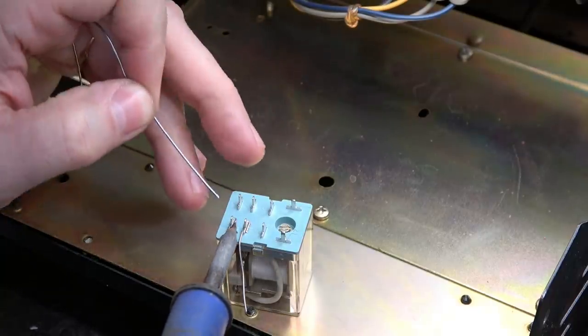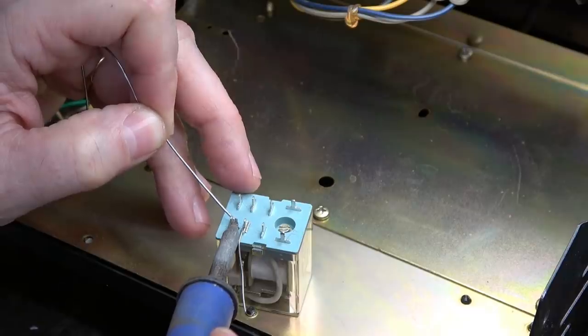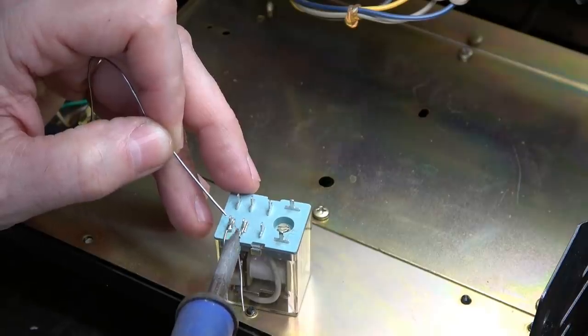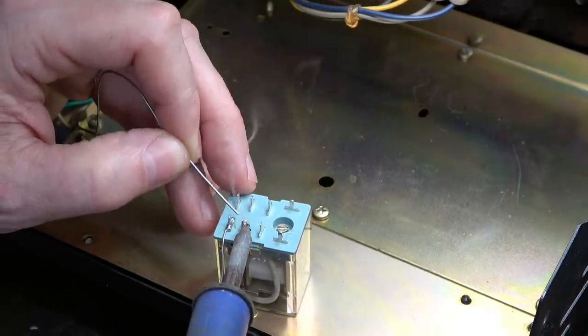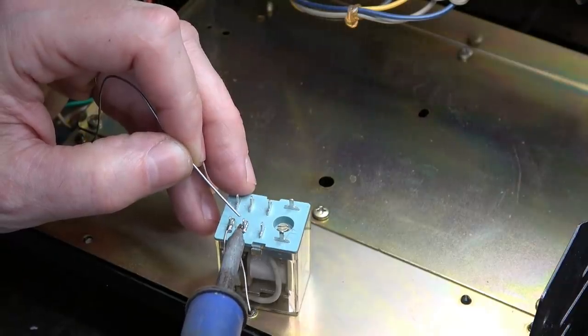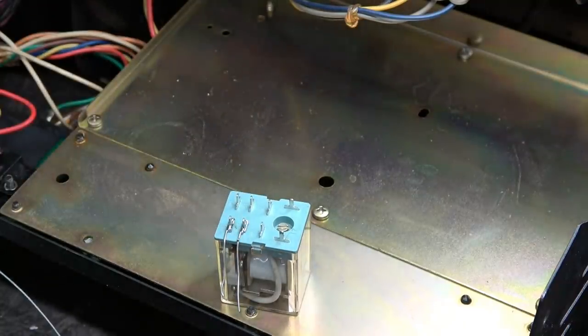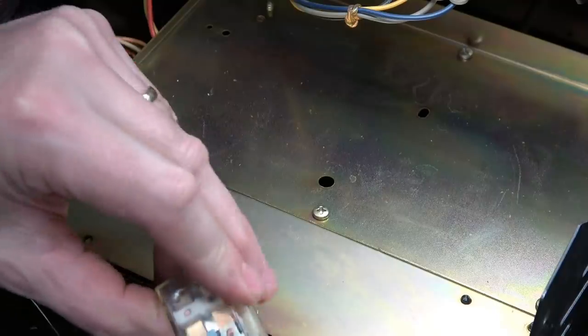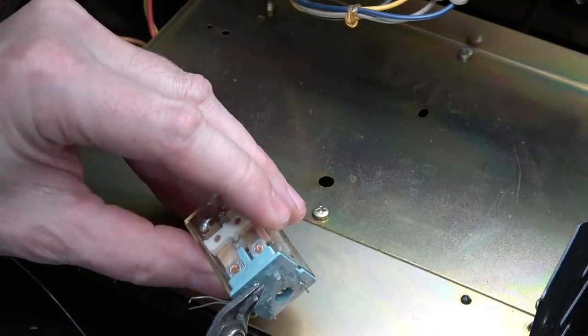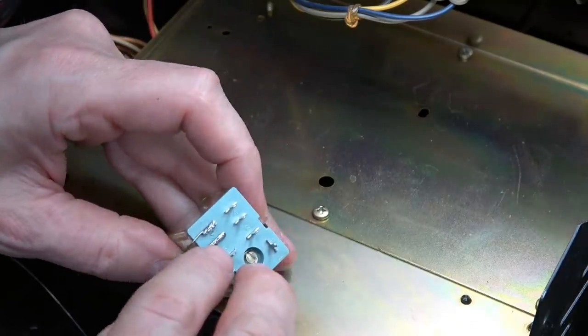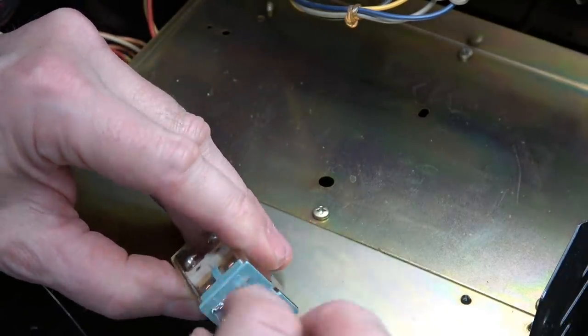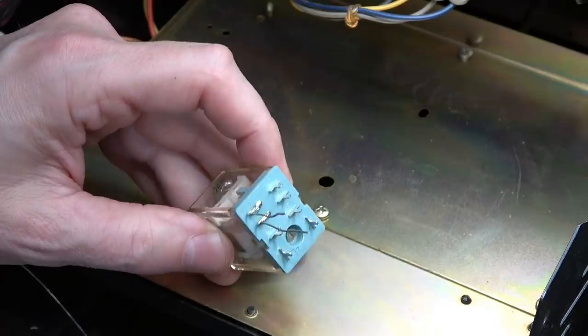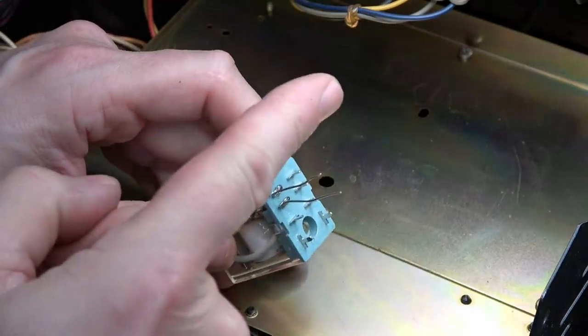I'm gonna solder these down close to the base. Look at that. Then we'll clip off these terminals that are improperly spaced, and I'll bend these wires up like that. They'll be more of a universal fit when I go through that circuit board. I'll be able to tweak them right in.